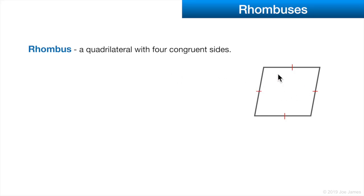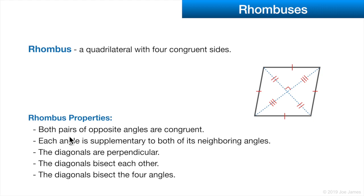A rhombus is like a lazy square — it's bent over. It's a quadrilateral with four congruent sides, but the definition doesn't tell us anything about the angles. Properties of a rhombus: both pairs of opposite angles are congruent; each angle is supplementary to both neighboring angles; the diagonals are perpendicular and bisect each other, though they're different lengths; and the diagonals bisect the four angles, so each angle is exactly cut in half by its diagonal.